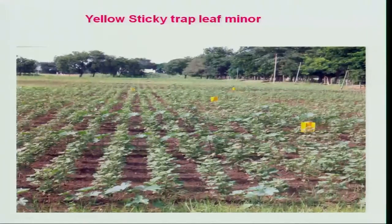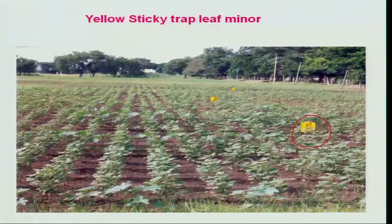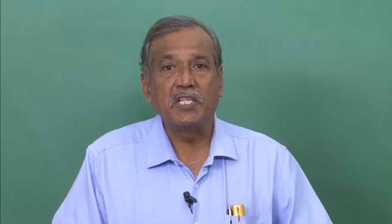Another important aspect of insect behavior is that insects are also attracted to certain colors, particularly yellow. The majority of soft-bodied insects are attracted to yellow color, and this behavioral phenomenon can be used to our advantage in managing pest populations in a given ecosystem. In the cotton ecosystem, particularly in the early stage of cotton growth, yellow sticky traps are used. These traps can be of any design — round, flat, or square — pasted with yellow color and smeared with any greasy substance; simple castor oil can be used as a sticky material. Both male and female adults of the serpentine leaf miner, which is an important invasive pest, are attracted to this yellow color and will be trapped, reducing the population considerably.